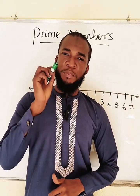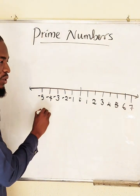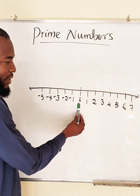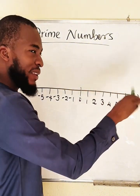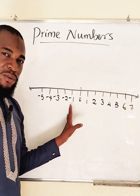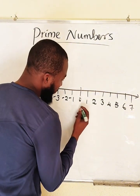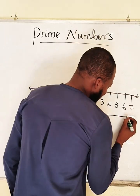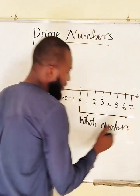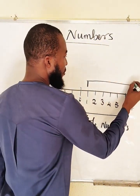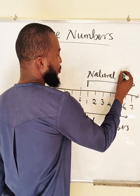Hello kids, let us define a prime number, but before then, did you know what this is? This is what we call a number line. The origin is zero. If you move to the right you have positive numbers — one, two, three, four, five, six, seven, eight, nine, ten, and so on. If you move to the left you have minus one, minus two, minus three, minus four, and so on. Anything to the right of zero is what we call whole numbers. From one and anything to the right, we call these natural numbers.